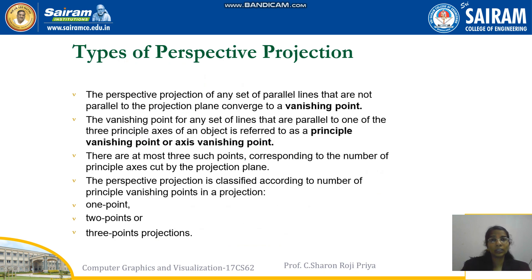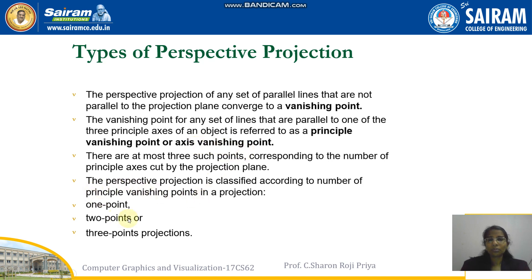In perspective projection, since the distance between the camera and the object is finite, all the projection lines converge at the COP. This convergence point is called the vanishing point. The vanishing point parallel to the principal coordinates is called the principal vanishing point or axis vanishing point. This perspective projection has three types: 1-point, 2-point, and 3-point projection.